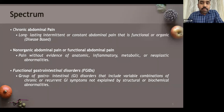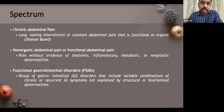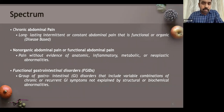Non-organic or functional abdominal pain is the commonest cause of recurrent abdominal pain — pain without any evidence of anatomic, inflammatory, metabolic, or neoplastic abnormalities. There are also functional gastrointestinal disorders: a group of GI disorders including variable combinations of chronic or recurrent GI symptoms not explained by structural or biochemical abnormalities. Functional abdominal pain is the most common category, and these functional GI disorders are classified according to the Rome III criteria.